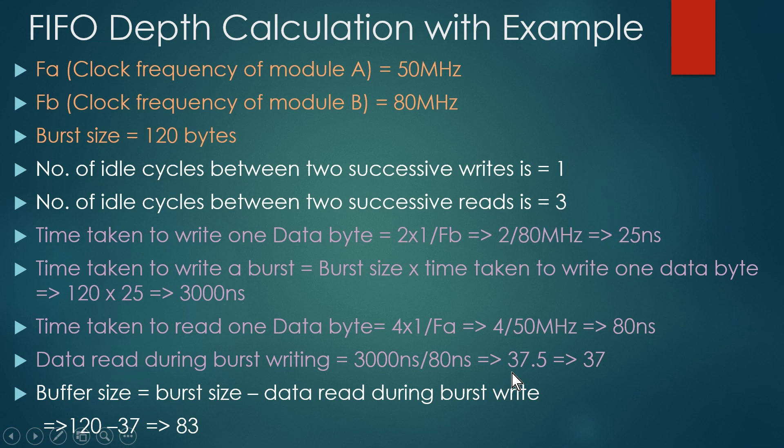We round 37.5 down to 37 to be on the safe side — always take the lesser value, not 38. The buffer size equals burst size minus data read during burst write: 120 − 37 = 83. So the required FIFO buffer size is 83 bytes.